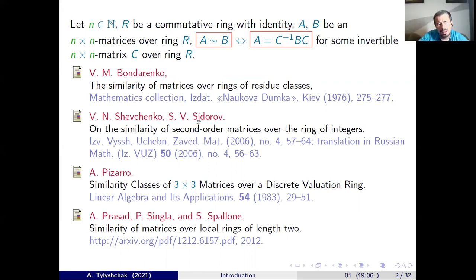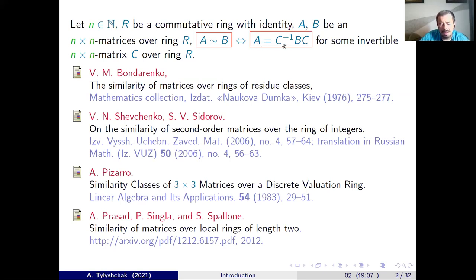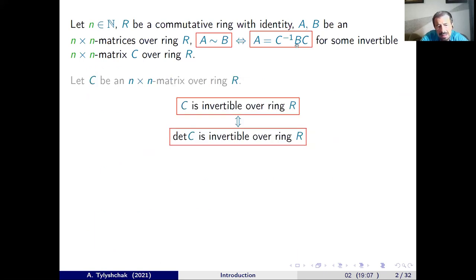We say that two matrices over a commutative ring with identity of the same size are similar if there exists some invertible matrix C over ring R such that matrix A equals C inverse multiplied by B multiplied by C. When a matrix is invertible over a ring, it is well known — it is enough to check that the determinant of the square matrix C is invertible over ring R.